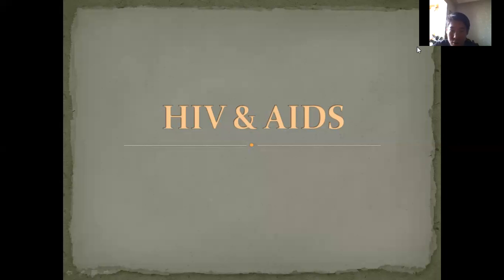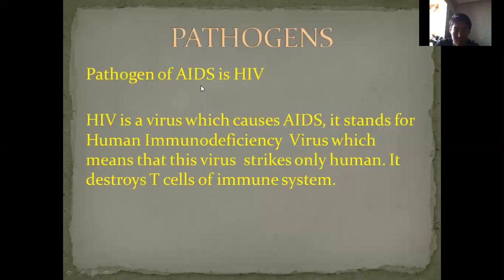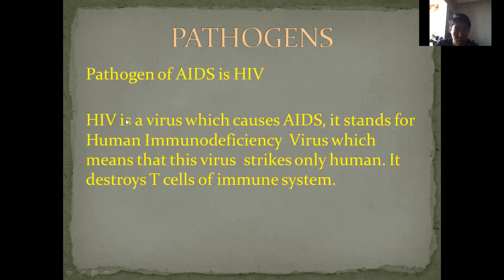Hello Mr. Lu. So here is my homework about HIV and AIDS. So what is a pathogen of AIDS? The pathogen of AIDS is an HIV virus, which means human immunodeficiency virus. And this virus can infect only humans.